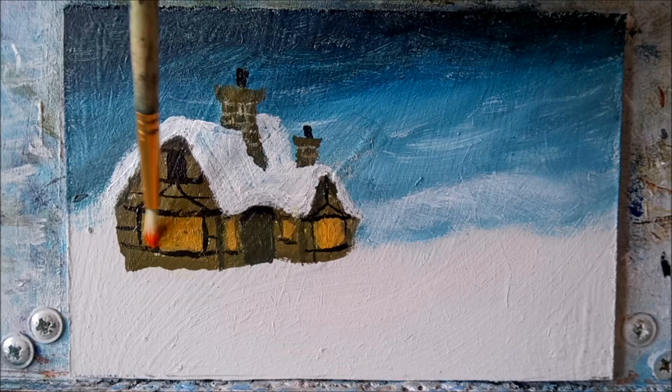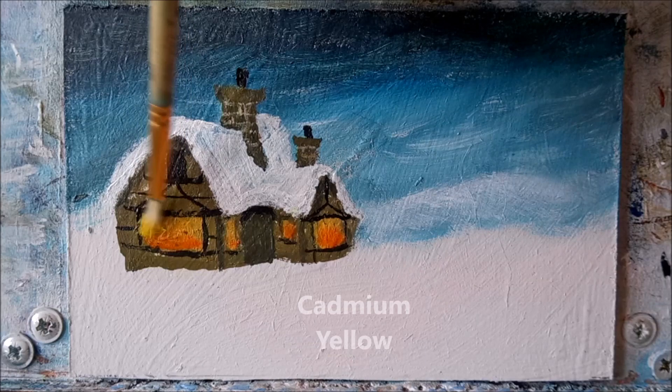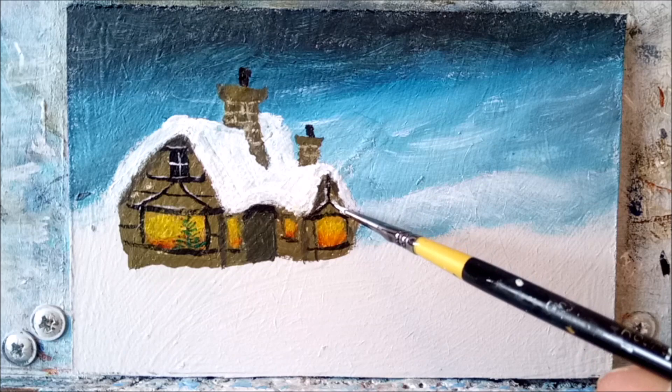Time to add in some window light and we're going to start off with orange there, and you don't need much. Cadmium yellow now for the top of the windows. And to show what time of the year it is, I've put a wee emerald green Christmas tree in the window. White for the clinging snow.